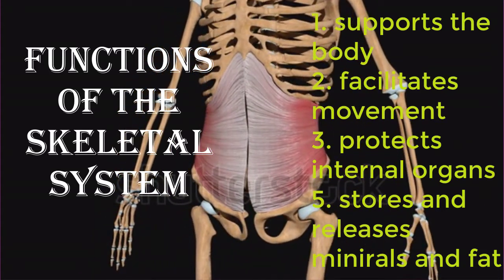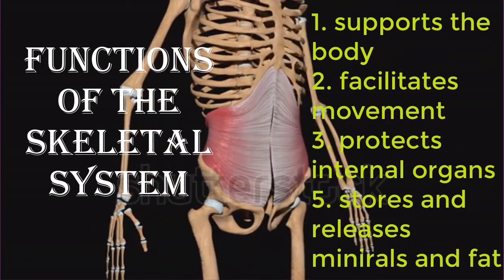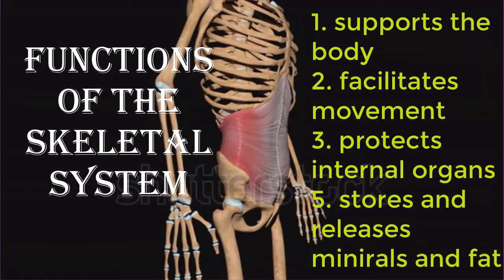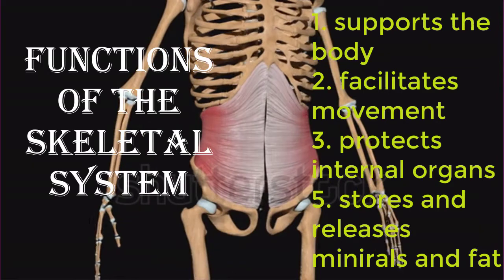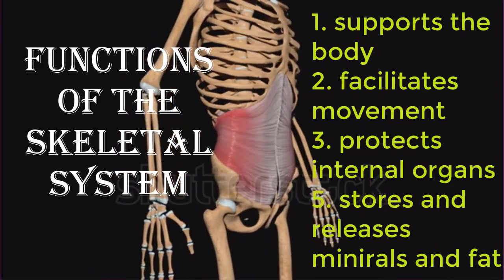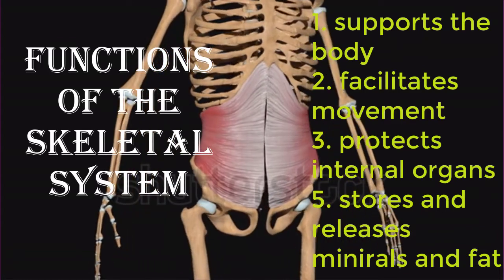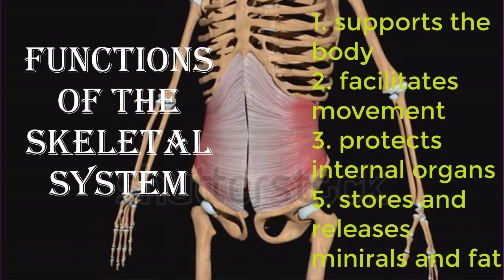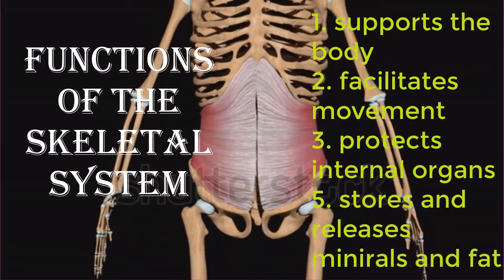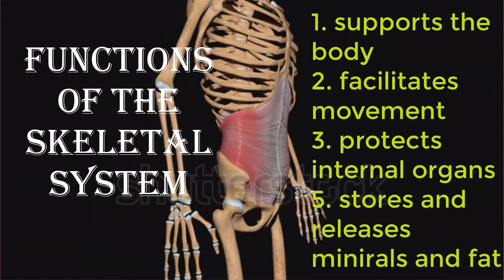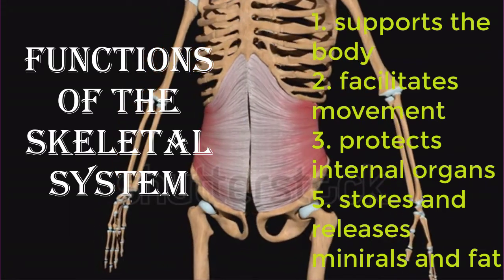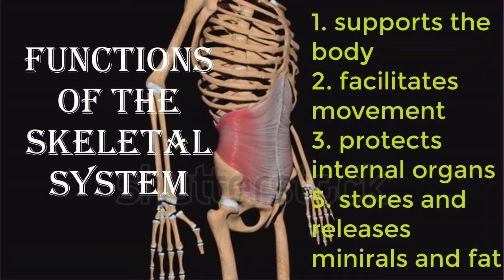For information on the interaction of the skeletal and muscular systems — the musculoskeletal system — seek additional content. Bone also protects internal organs from injury by covering or surrounding them. For example, your ribs protect your lungs and heart, the bones of your vertebral column or spine protect your spinal cord, and the bones of your cranium — your skull — protect your brain.